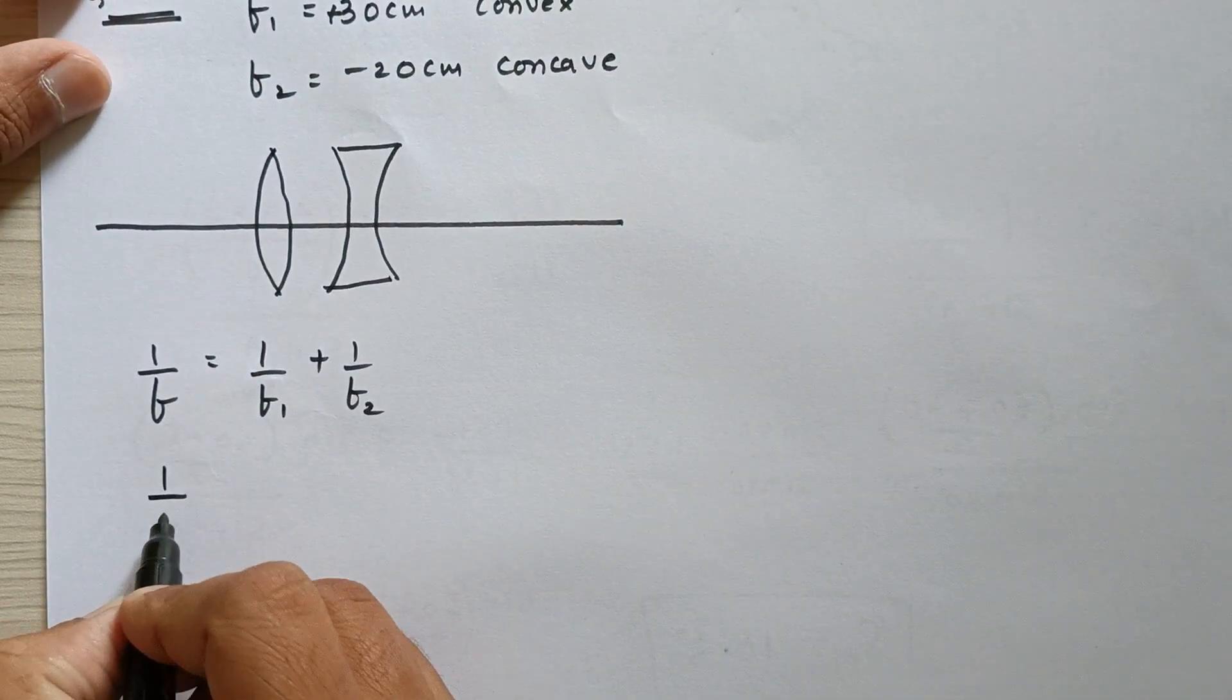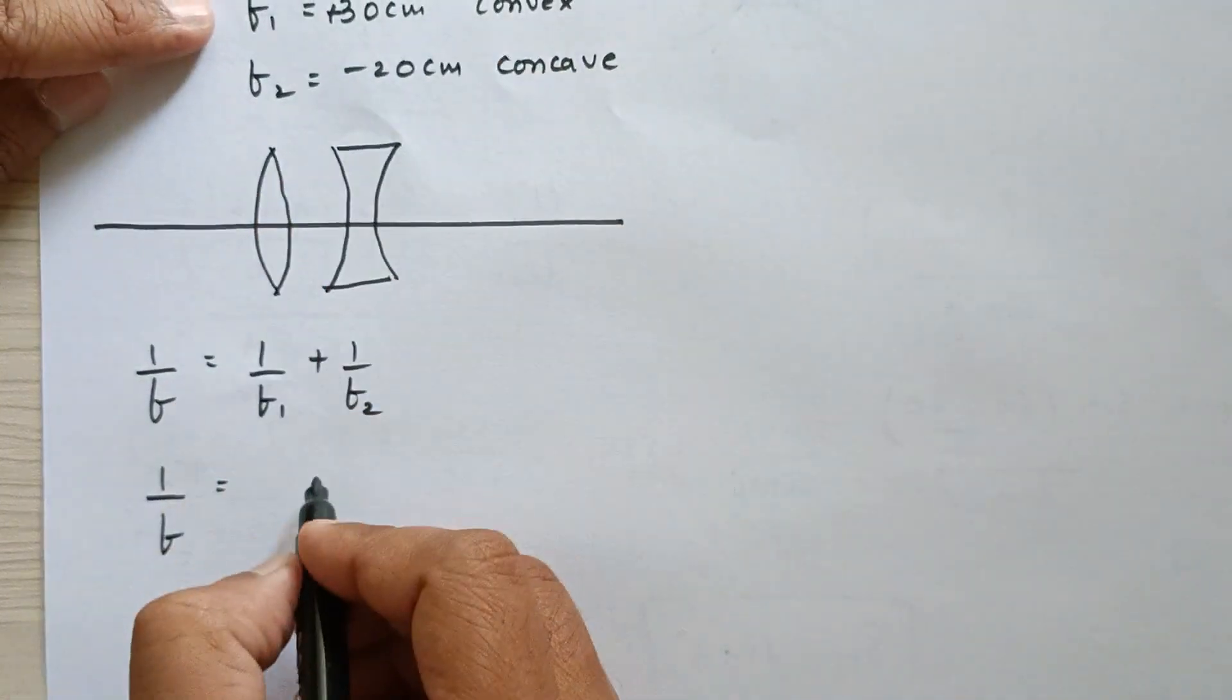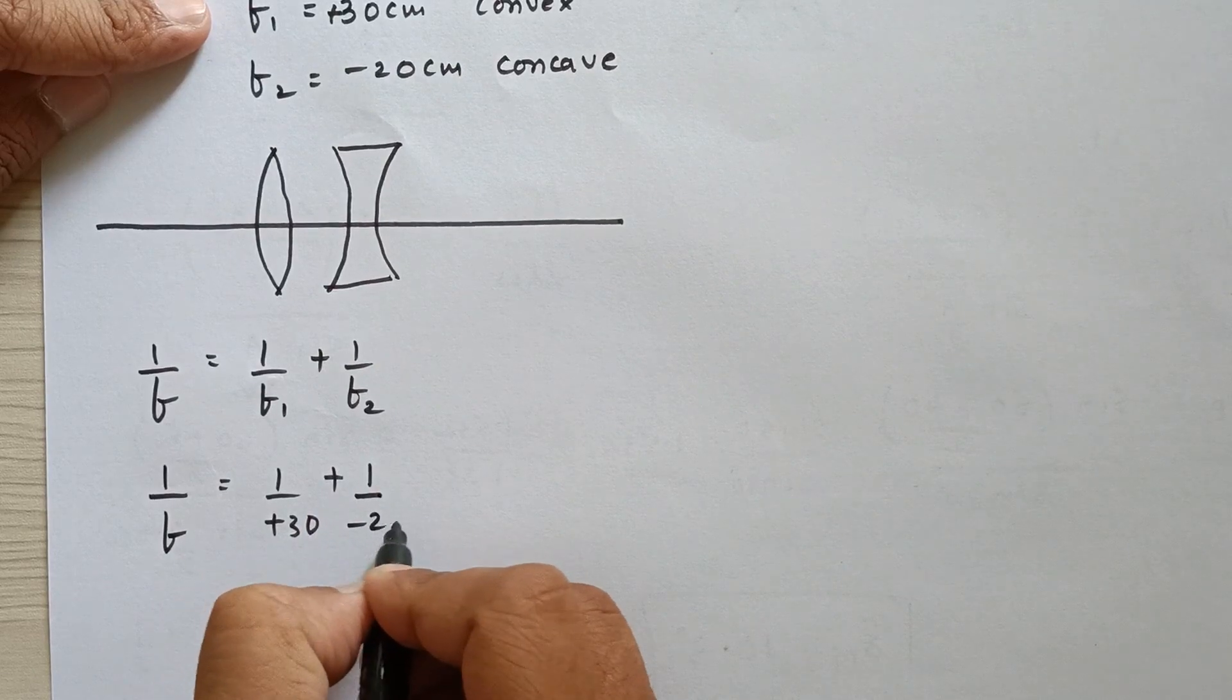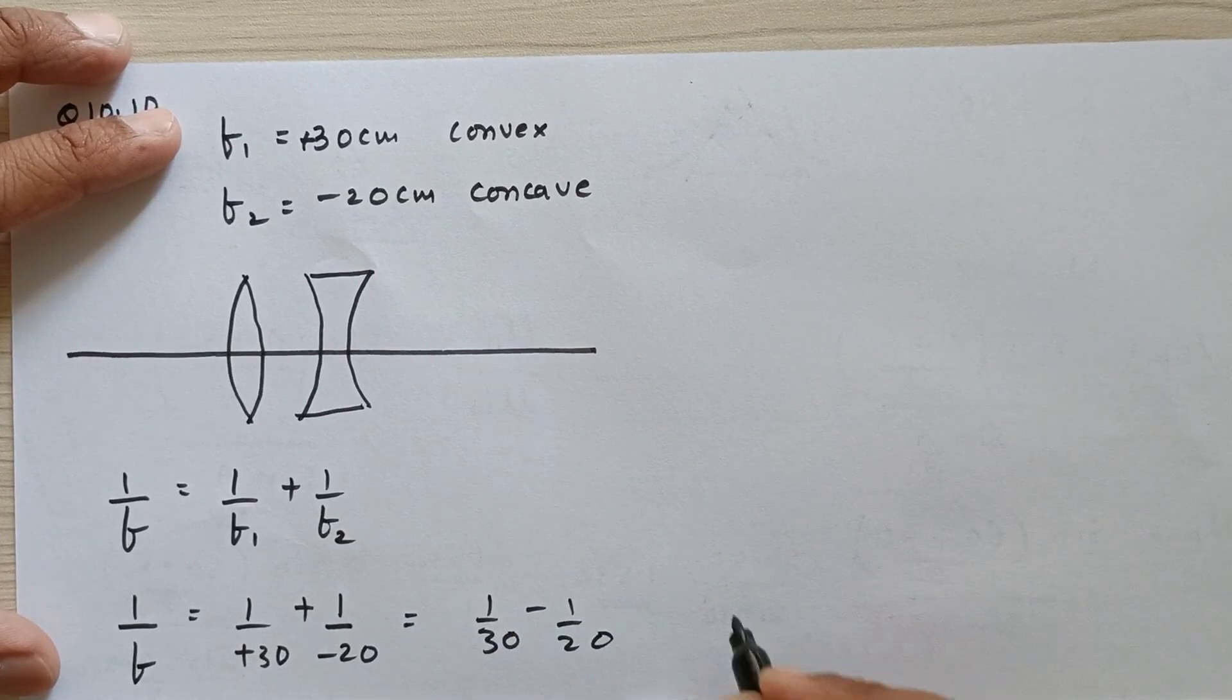Let's find out the equivalent focal length of the combination. This is 1 upon F equals 1 upon plus 30 plus 1 upon minus 20, which is 1 upon 30 minus 1 upon 20.